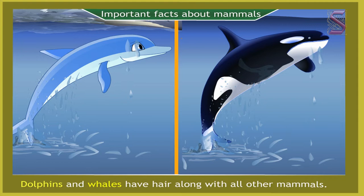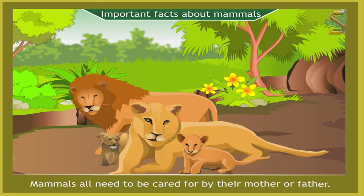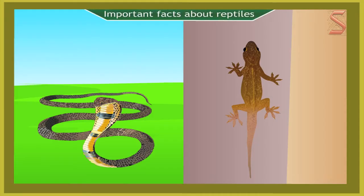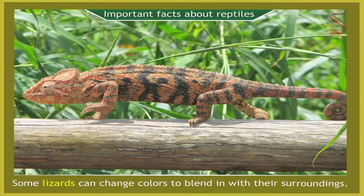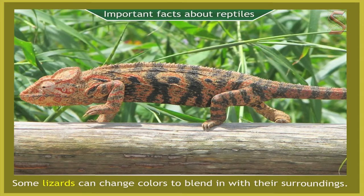All mammals need to be cared for by their mother or father. Important facts about reptiles: snakes and lizards are two of the largest groups of reptiles. Some lizards can change colors to blend in with their surroundings.